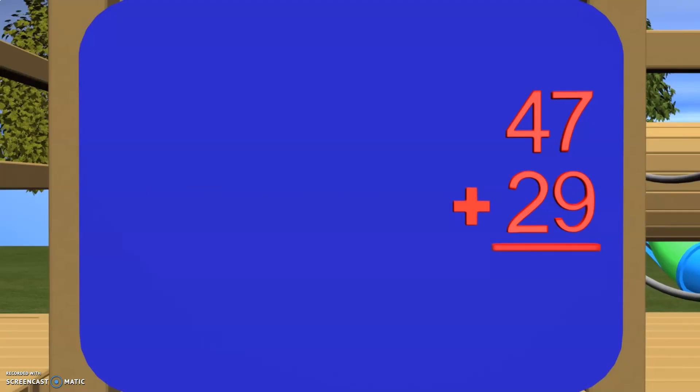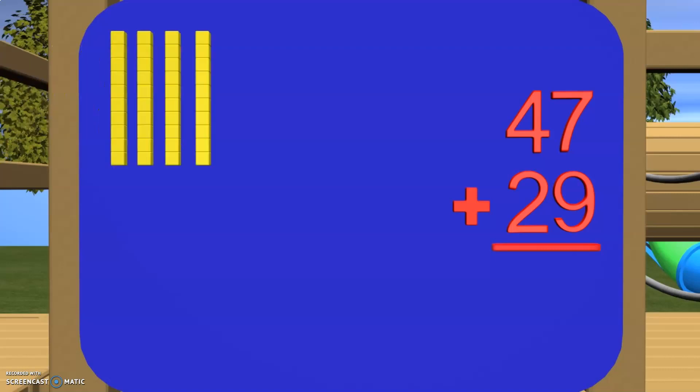In this problem, we have 47 plus 29. Let's represent these numbers using our base 10 blocks. To get 47, how many tens blocks do we need? How many ones blocks do we need? If you said 4 tens and 7 ones, you are correct. We need 4 tens blocks and 7 ones blocks. Now to represent the number 29. How many tens blocks do we need? How many ones blocks? We need 2 tens blocks and 9 ones blocks.